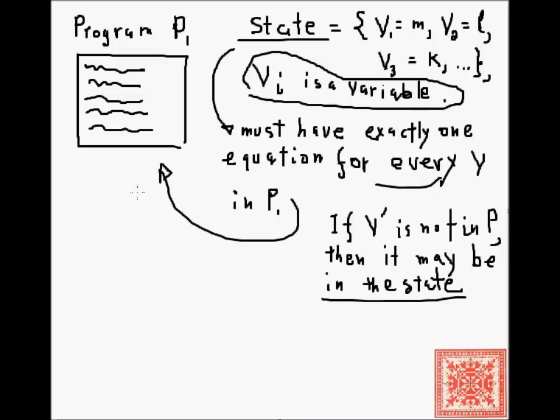Let's talk about program snapshots, also known as instantaneous descriptions. Suppose this program P1, the L program, has n instructions, where n is a natural number.